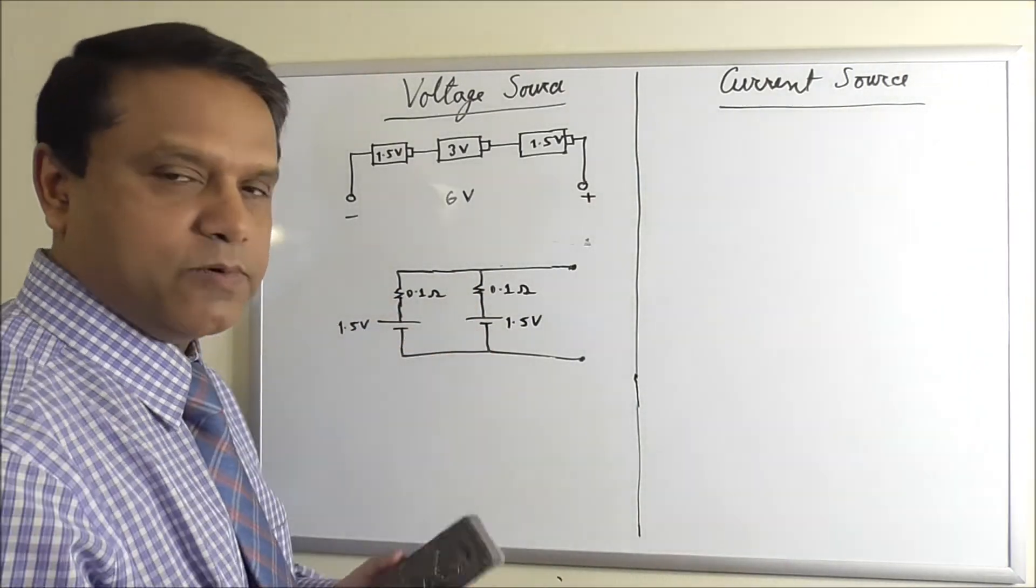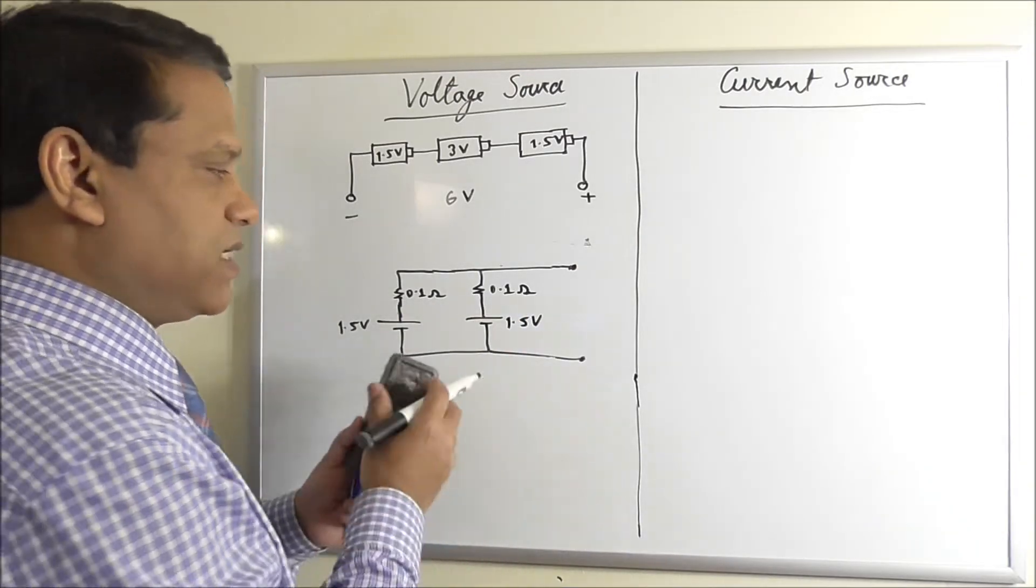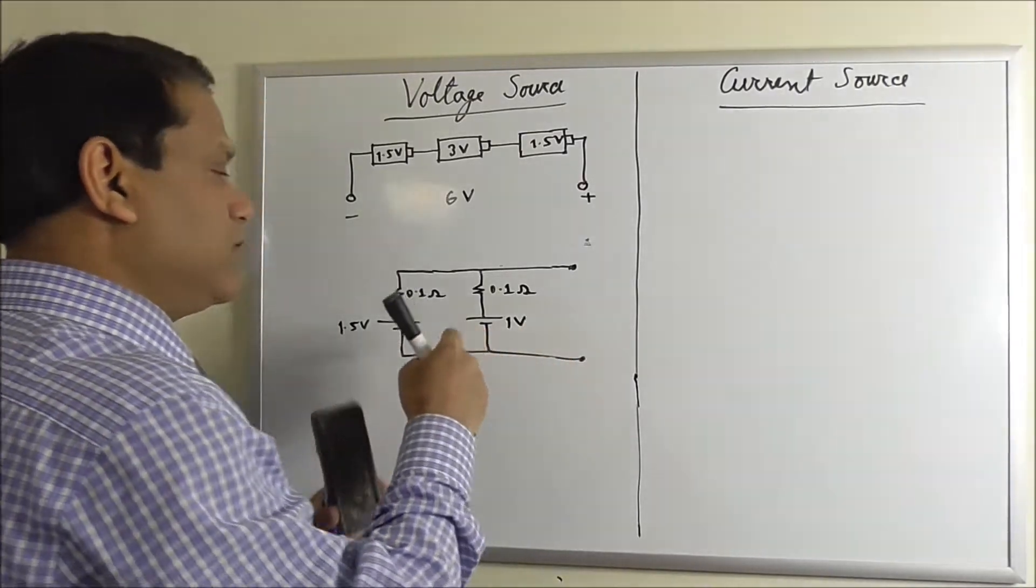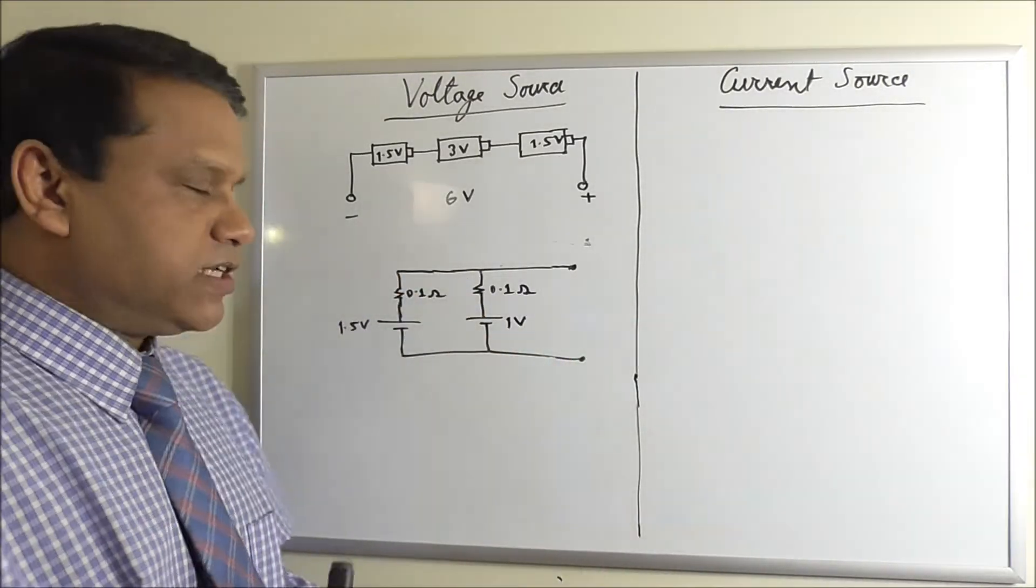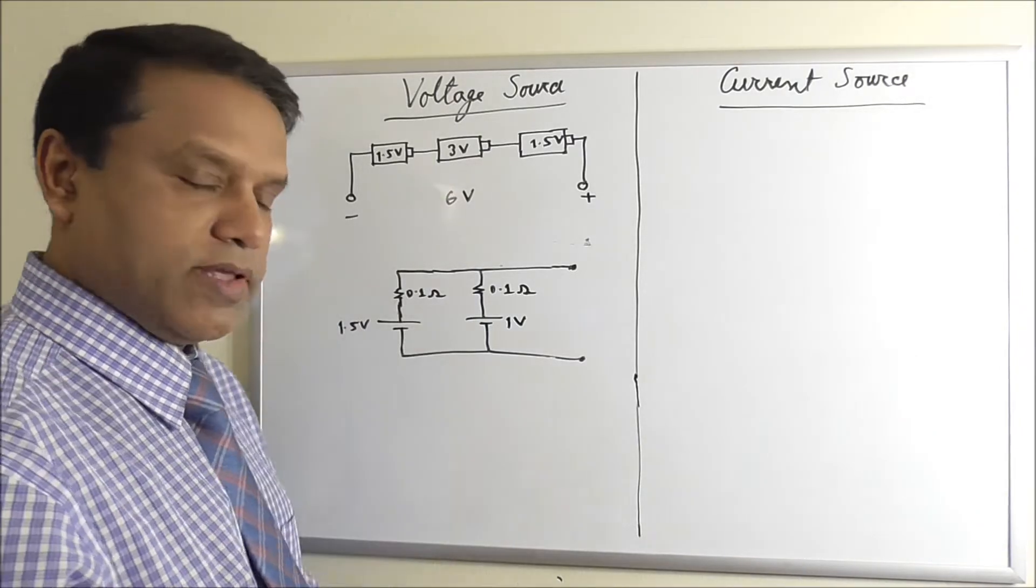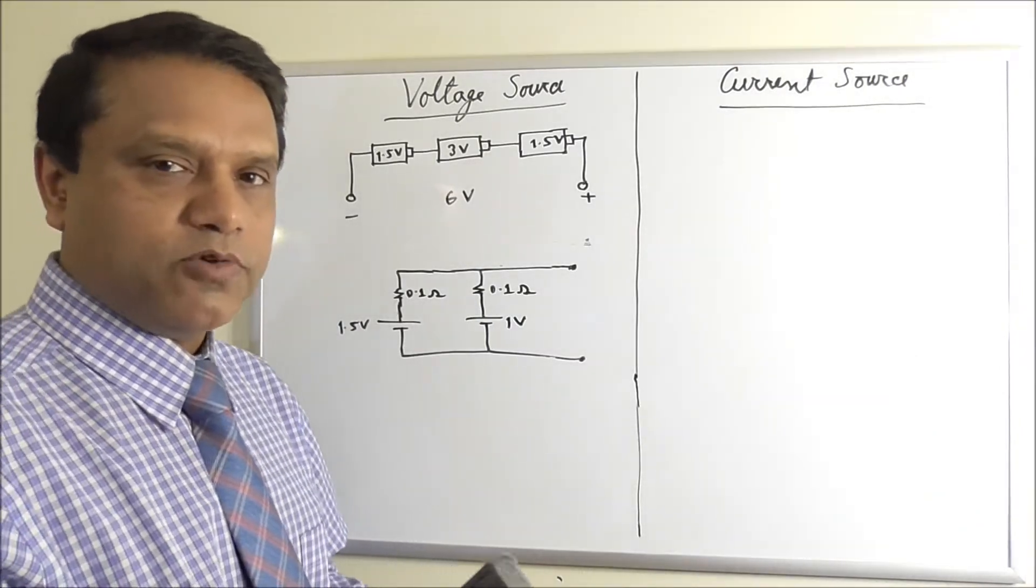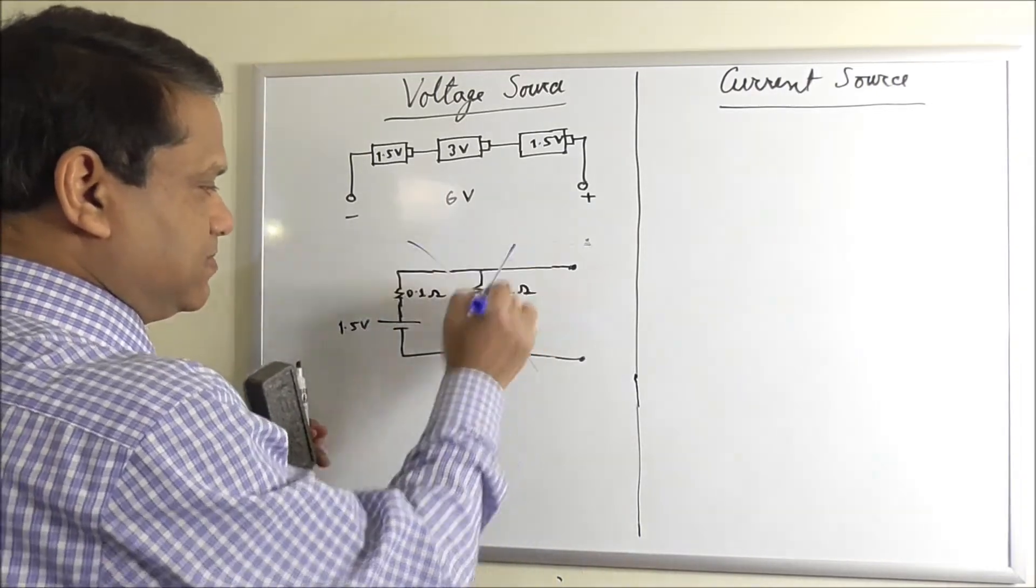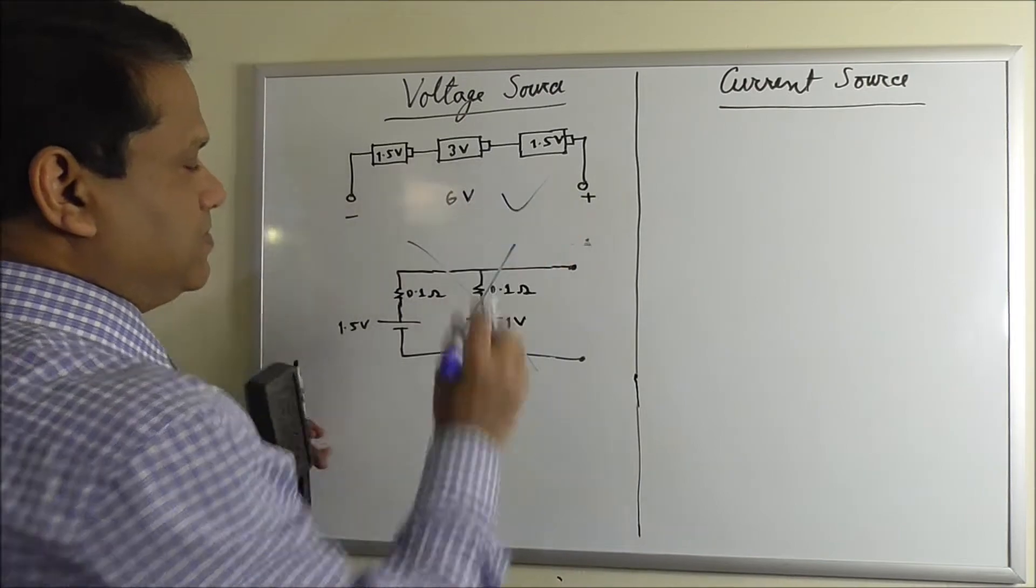With time, one battery voltage may go down. Say it becomes one volt. Now you have a difference of voltage and you have a big current flowing, and that will damage the batteries and probably cause fire, smoke. So you should not put batteries in parallel. This is not a good practice.